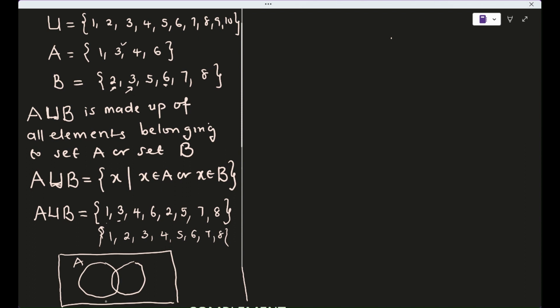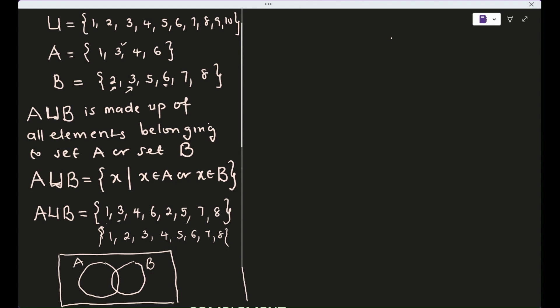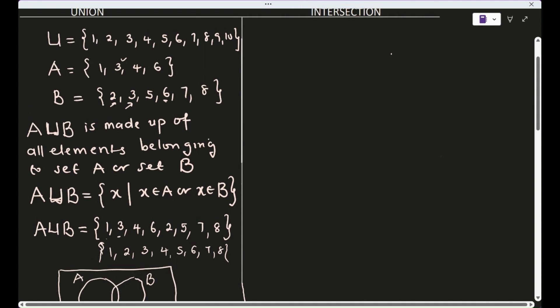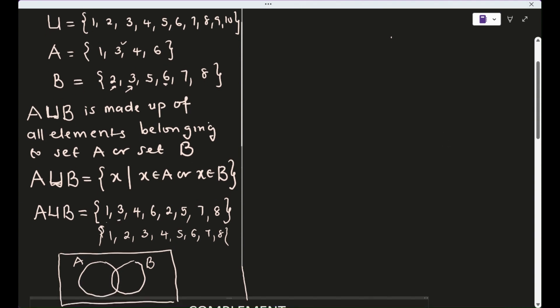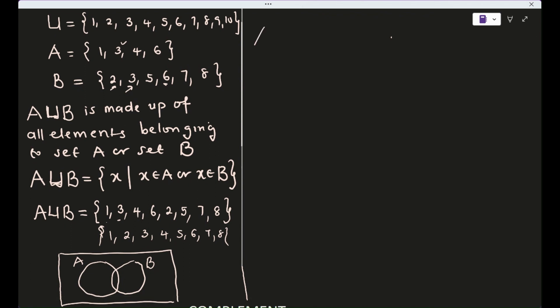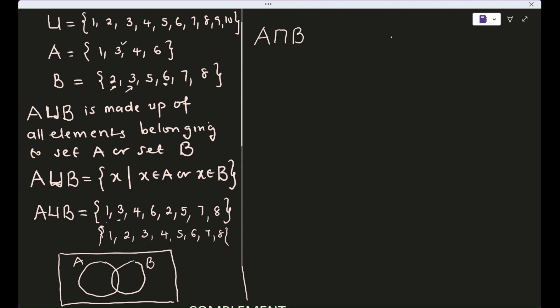Now let's talk about intersection. The intersection is denoted by ∩. Before we complete the Venn diagram, let's define intersection so we know which elements go in each region.